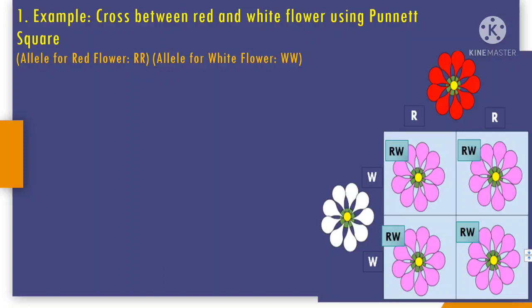Now let's have some examples of incomplete dominance. For example number 1, a cross between red and white flower using a Punnett square. We will use the allele R for red flower and the allele W for white flower. As you can see, we will use genotype RR for red flower and genotype WW for white flower. In the Punnett square, you cross R and W on the upper side and left corner.